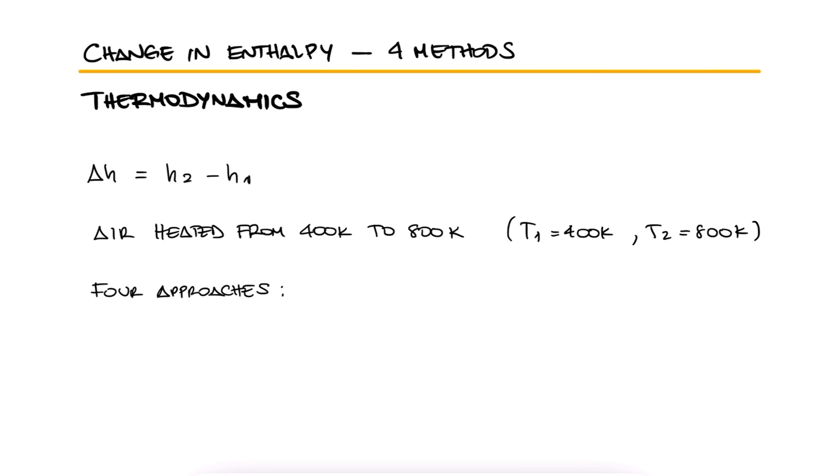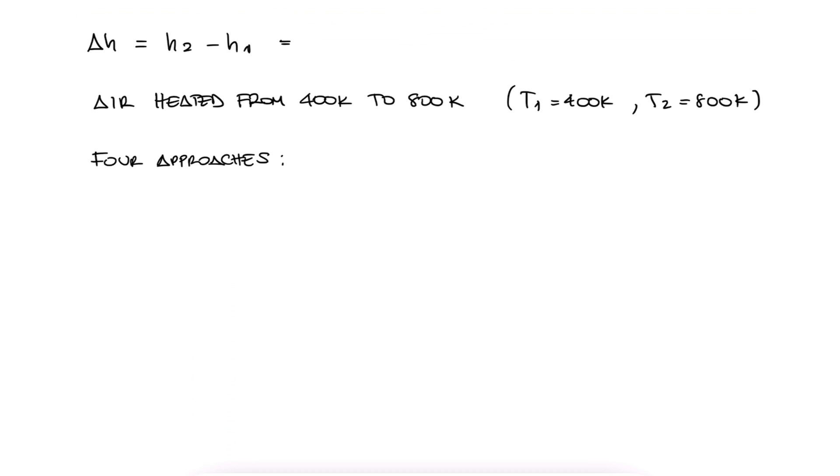From that main video, we learned that the change in enthalpy is equal to the integral from T1 to T2 of Cp dT. The simplest and most accurate way of finding this is to use the tables for air at those specific temperatures.